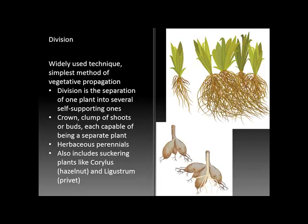A number of suckering plants like corallus or privet can be easily divided by simply cutting off the suckers and planting them away from the parent plants. The fundamental point of division is that some material from the crown or a clump of shoots and buds needs to be detached. For the most part these will have roots already associated with them, so there is no need for formation of adventitious roots. The plants are already a complete package and just need to be teased apart and put into a new separate environment.